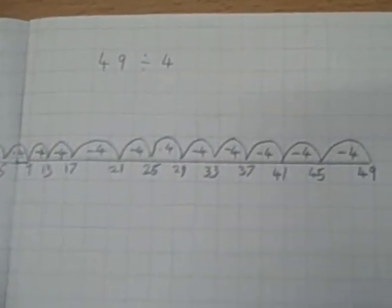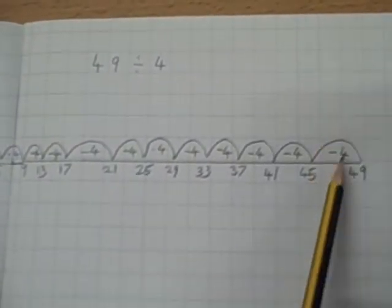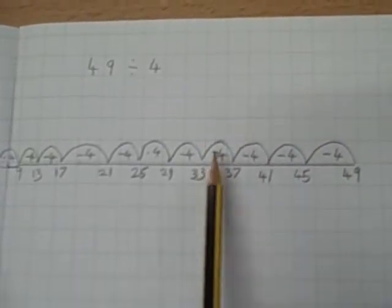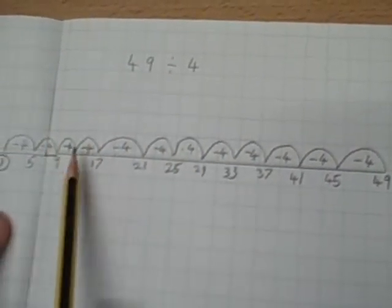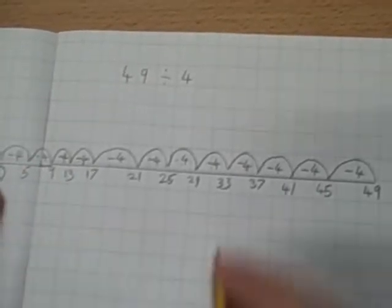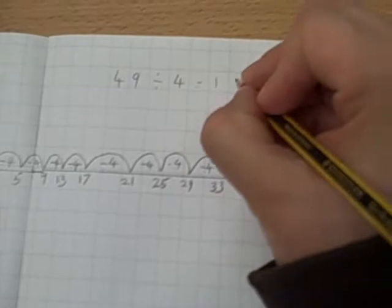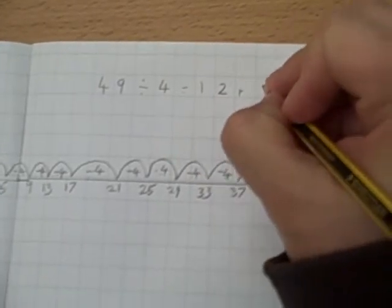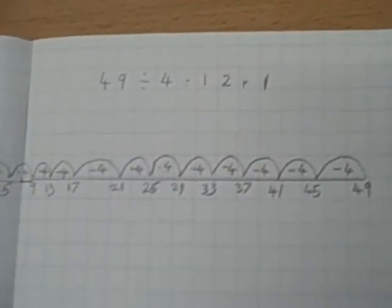We will count how many groups of 4 we have made. 1, 2, 3, 4, 5, 6, 7, 8, 9, 10, 11, 12. So our answer would be 12, remainder 1.